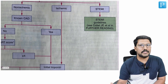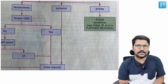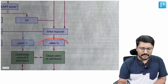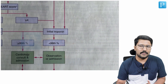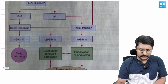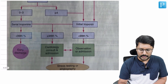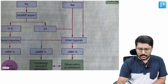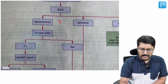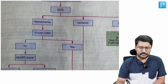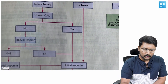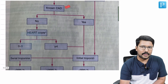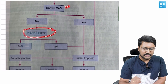If the ECG is ischemic but not suggestive of STEMI — like non-specific ischemic changes, looking like non-ST elevation ACS — you will look at the initial troponin levels. If it is less than the 99th percentile, observation and hospitalization are warranted. If more than the 99th percentile, you go ahead with cardiac consultation and further evaluation. When the ECG is non-ischemic, particularly in a patient not known to have coronary artery disease, the HEART score is used.